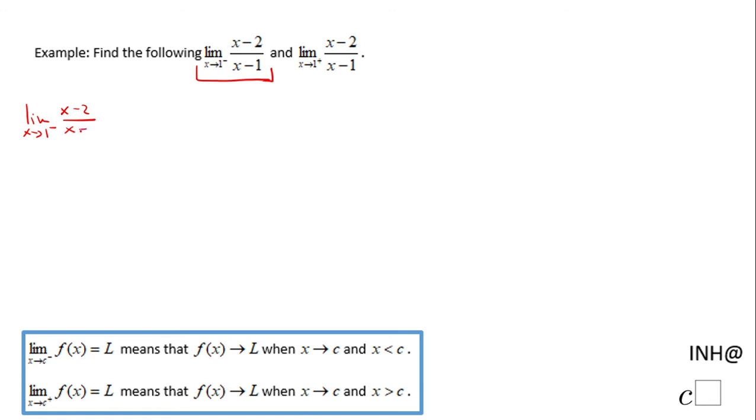The first thing you want to do when you have a limit is to use the value given. X approaches 1, so we can plug in 1: (1 - 2) over (1 - 1). You notice here we have negative 1 over 0, so this is an undefined form. But we can take a look and see numerically if we have a limit or not.